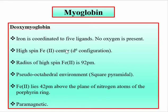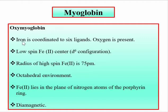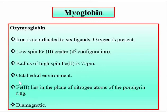In oxymyoglobin, iron is coordinated to six ligands, with oxygen as the sixth ligand. The iron becomes a low spin Fe2+ center with d2g6 configuration — no unpaired electrons, so it is diamagnetic. The environment around Fe2+ is octahedral, the radius decreases to 75 picometers, and the iron lies in the plane of the porphyrin nitrogen atoms.